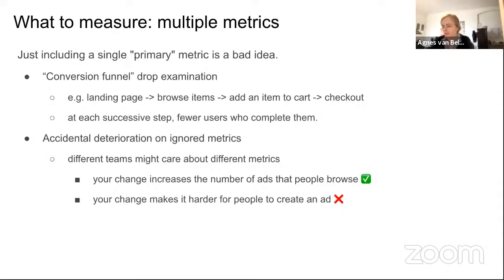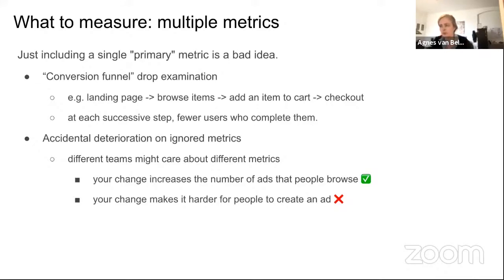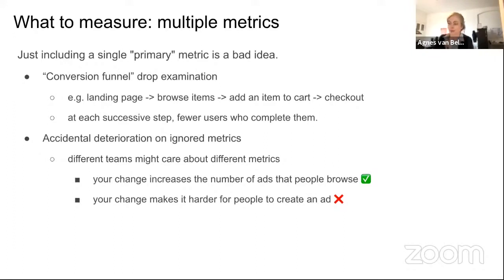Secondly, if you include only one or a few metrics, you can get accidental deterioration on the metrics you ignored, and different teams care about different metrics. For example, your change might increase the number of ads people browse, so you are happy — but it could make it harder for people to create an ad, and another team responsible for that won't be happy when they find out later.